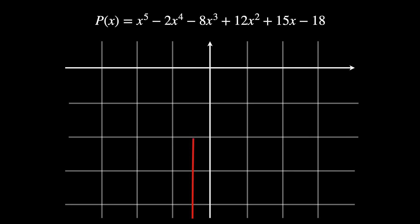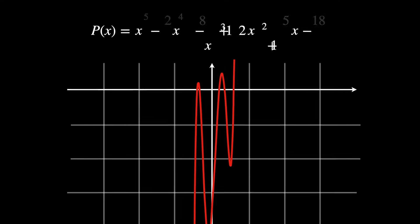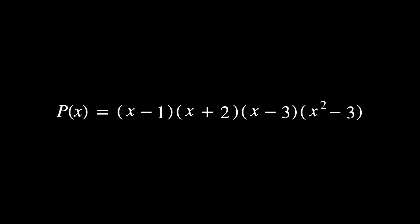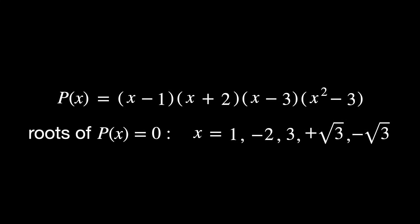In order to understand transcendental numbers, let's take a step back and talk about the definition of algebraic numbers. Imagine the following polynomial. Fortunately, this polynomial can be decomposed in such a way that its roots become obvious. The roots of this polynomial are x equal to 1, minus 2, 3, and plus or minus the square root of 3.